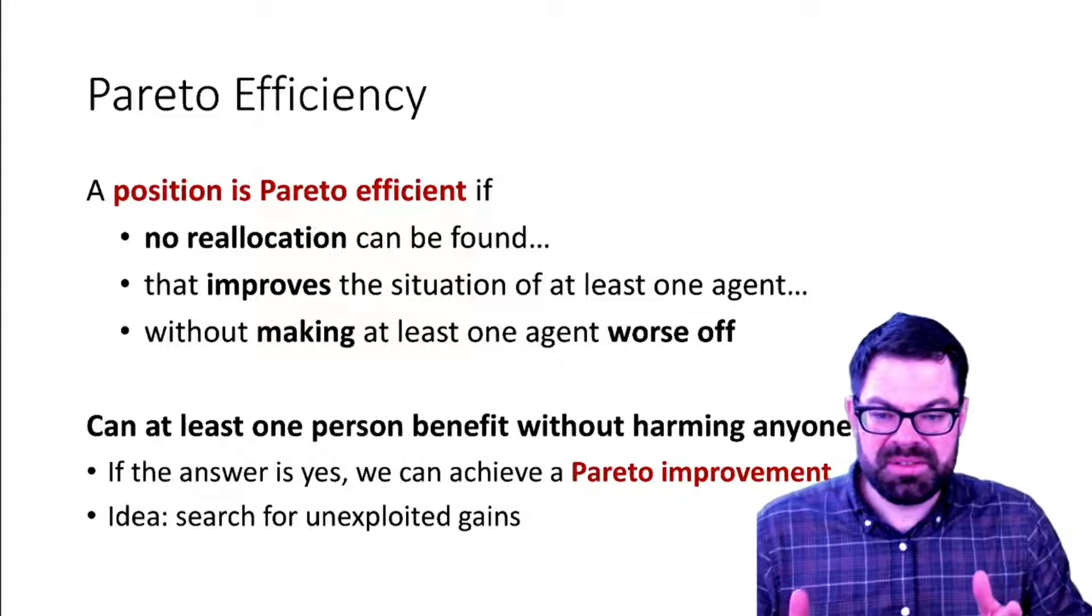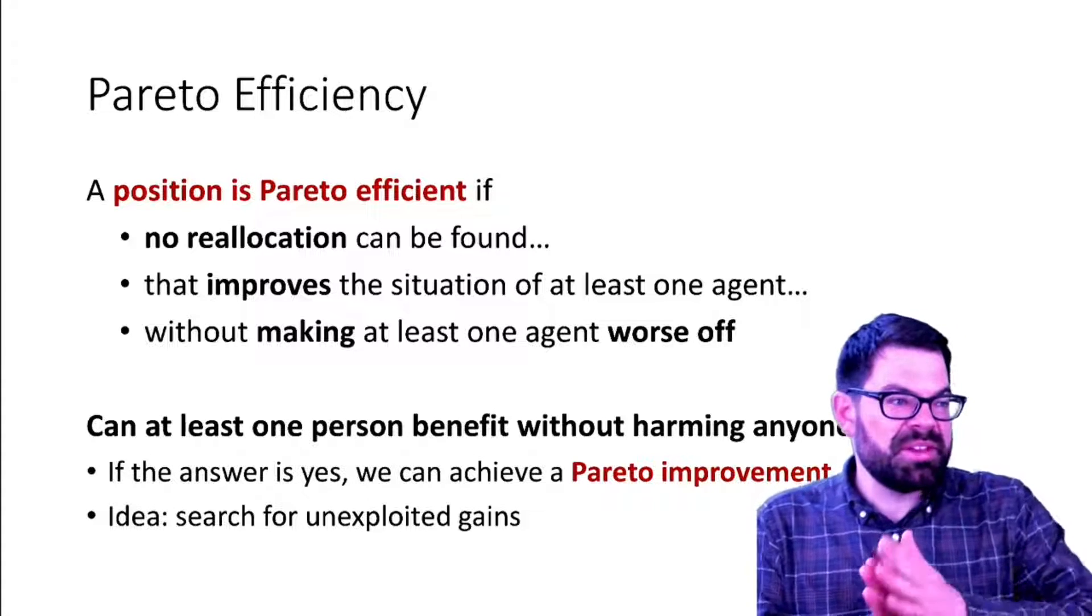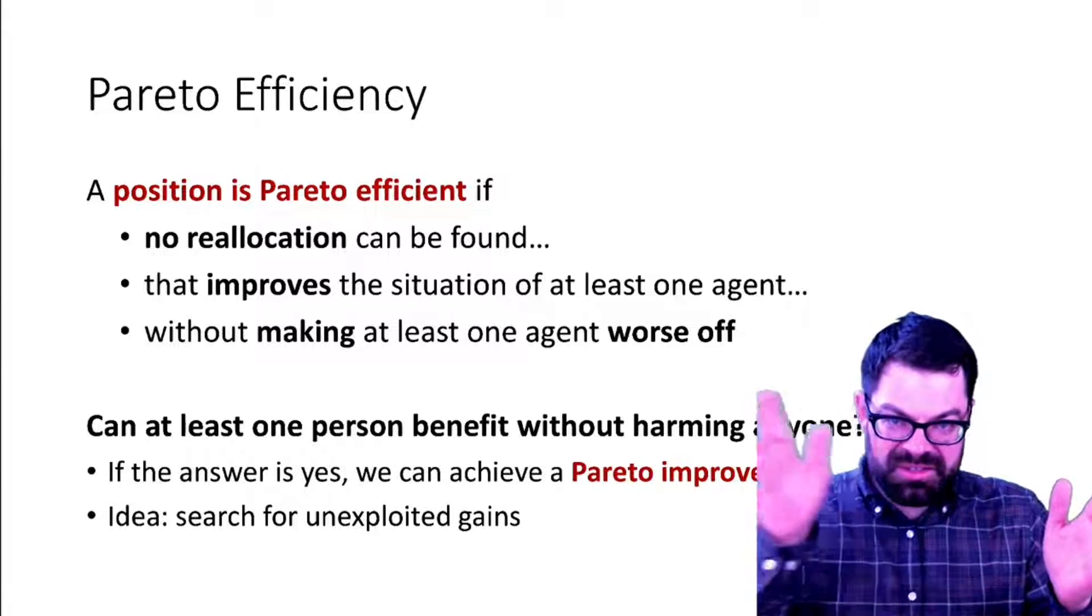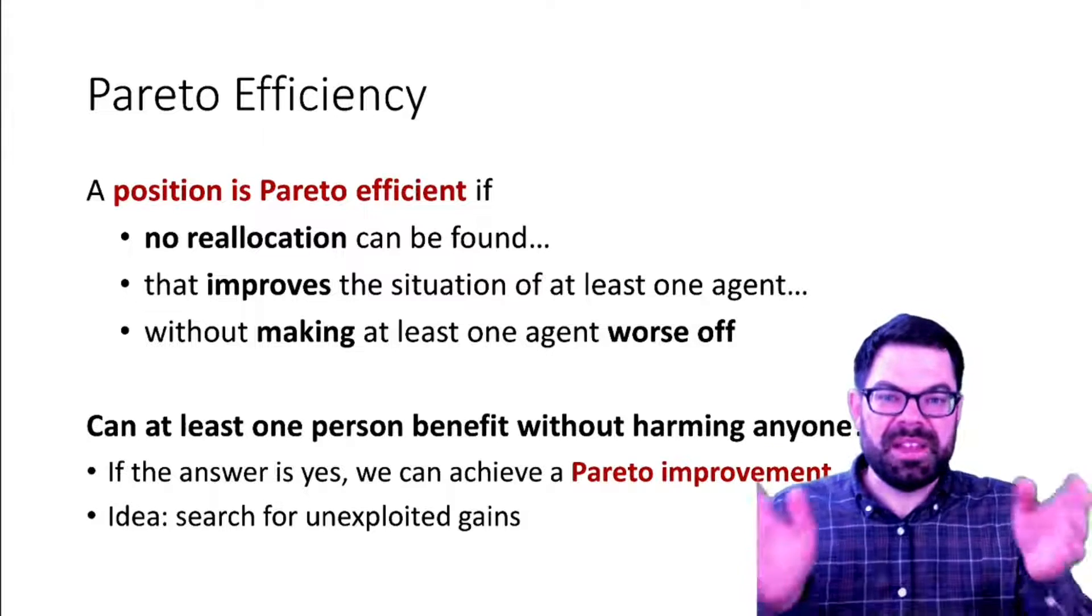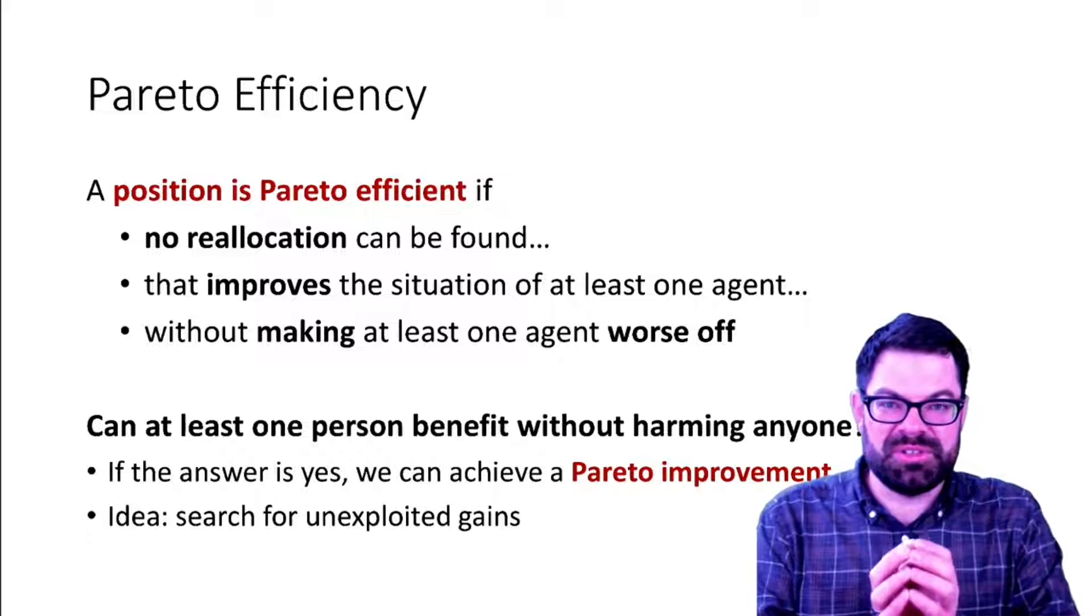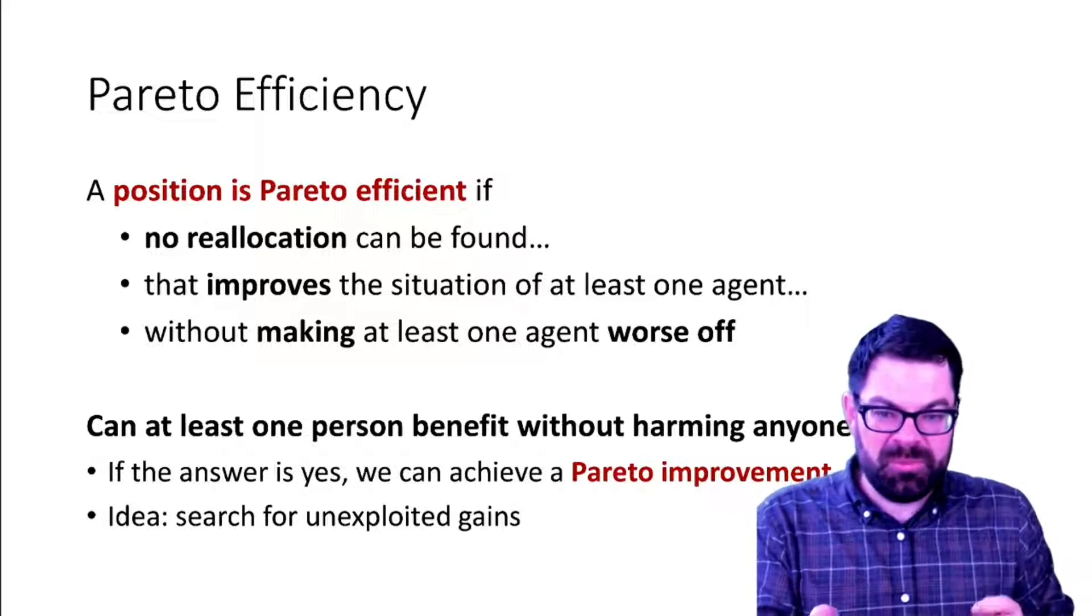In other words, if I'm at a point where the only way to make someone better off is actually to make someone else worse off, that point is to be considered Pareto efficient. So I cannot move away from that point and say I give more to Andrew without harming Betty.